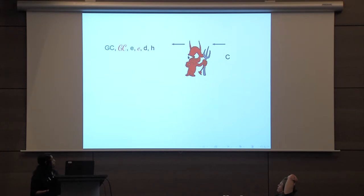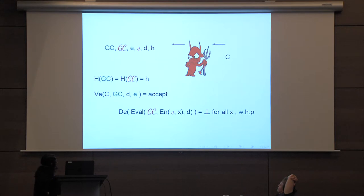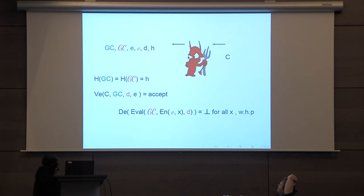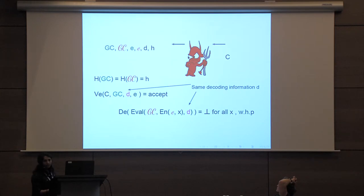The adversary outputs two different garbled circuits along with two different encoding and decoding information d and hash h. If the two garbled circuits collide in their hash, and one garbled circuit (the green one) verifies, then the red garbled circuit fails to evaluate — that is, decoding the output of Eval on the red garbled circuit fails. The adversary may supply different encoding information for each circuit, but the decoding information d is the same. This restriction is essential for hash security, because without it the adversary could supply a d that decodes any string returned by Eval to arbitrary outputs.